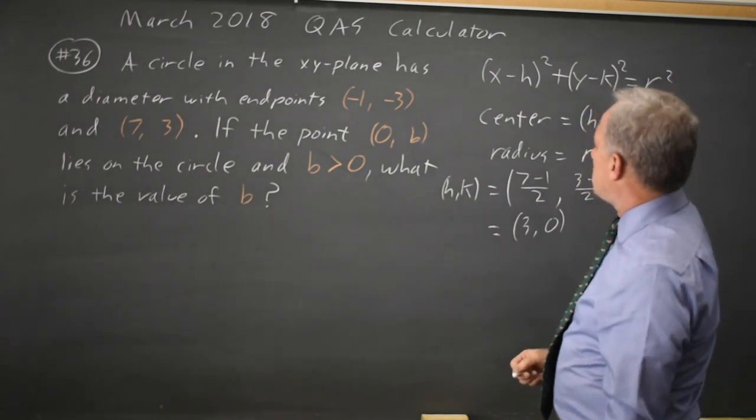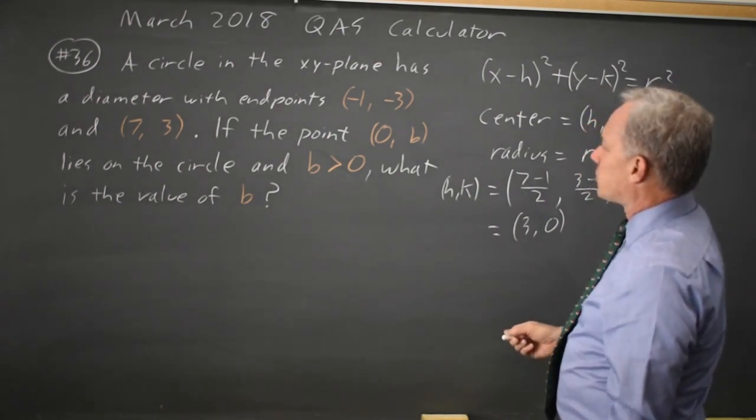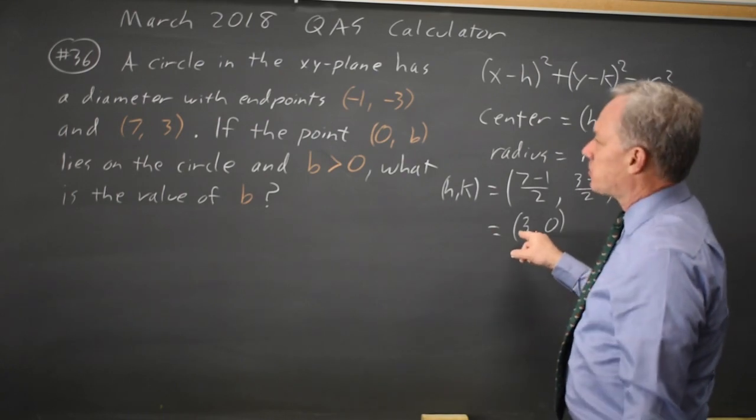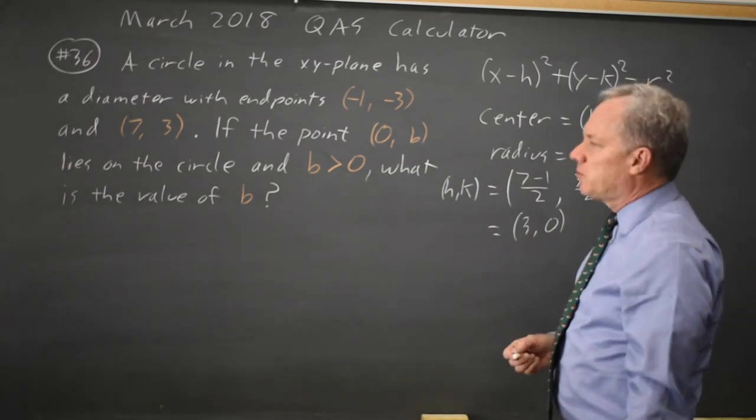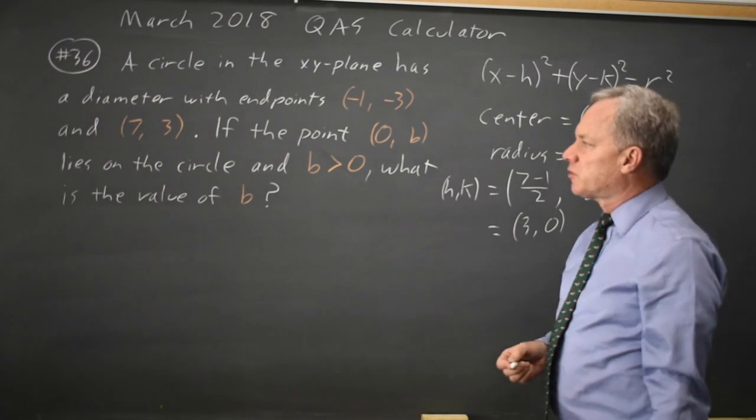So the radius of a circle is the distance from the center to any point on the circumference.